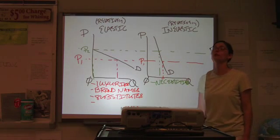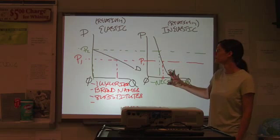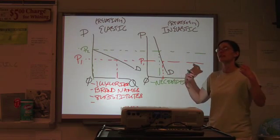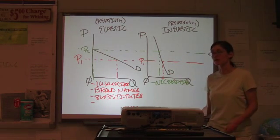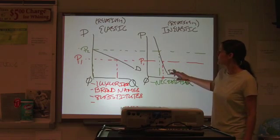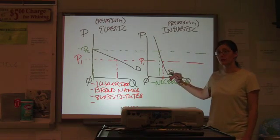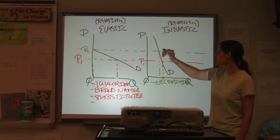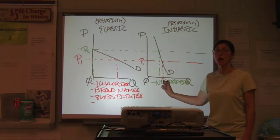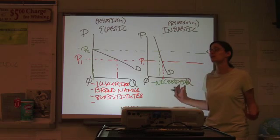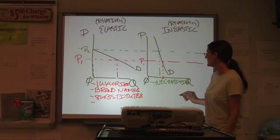A classic example that you are bound to see in a multiple choice question is insulin for diabetics. I've seen that one so many times. Because it's something that they cannot live without. They have to have it. If the price went up, they would still pretty much buy exactly the same thing because it's something that they need. Necessities.